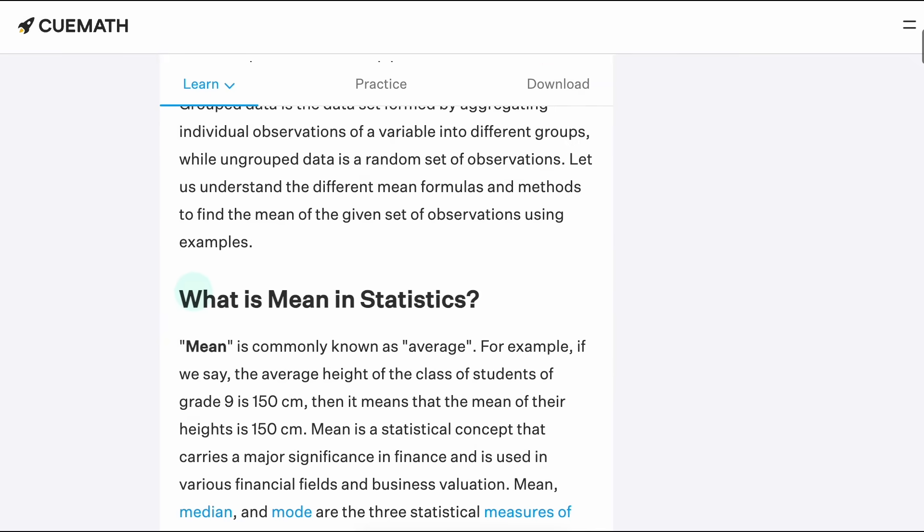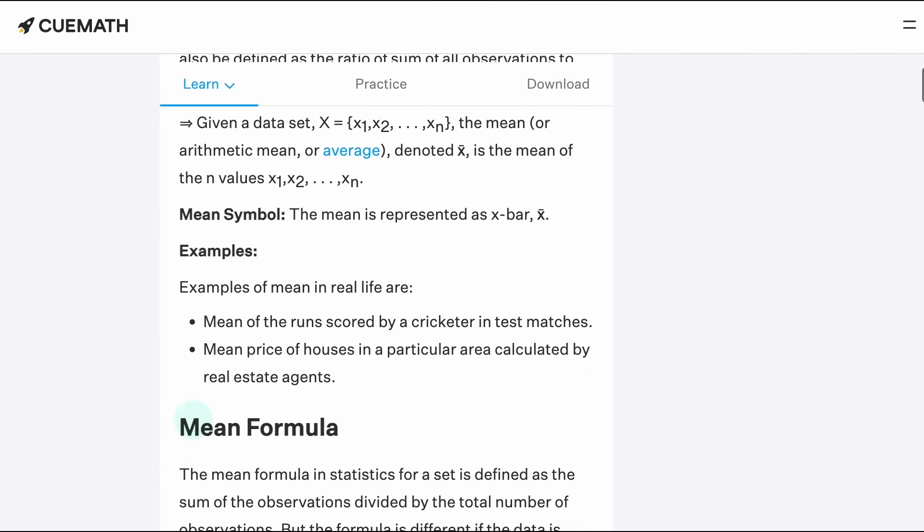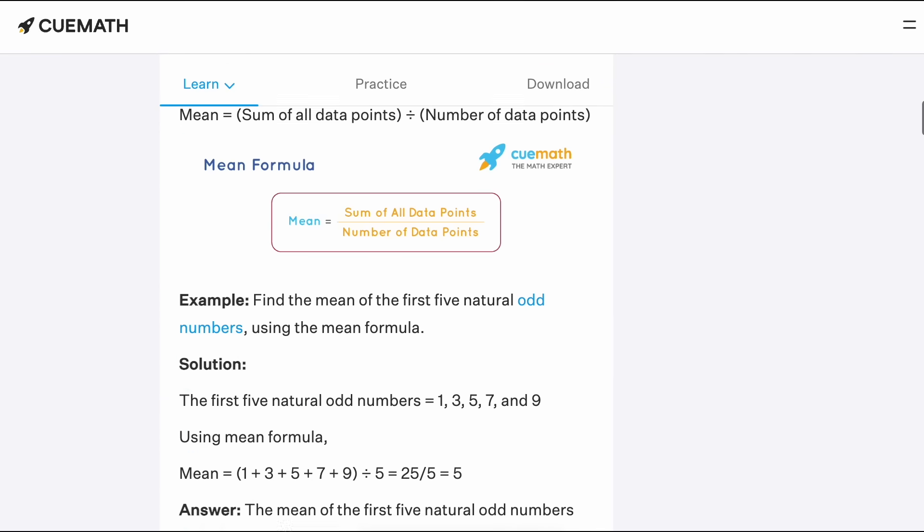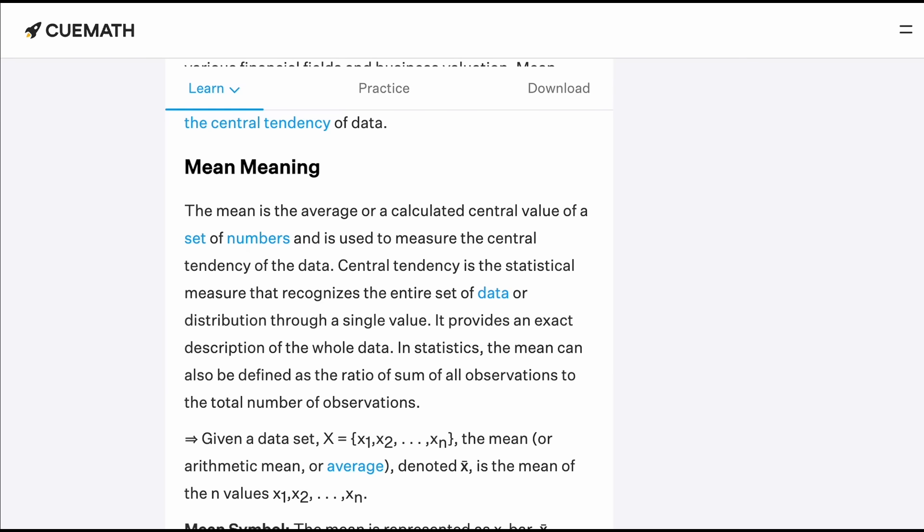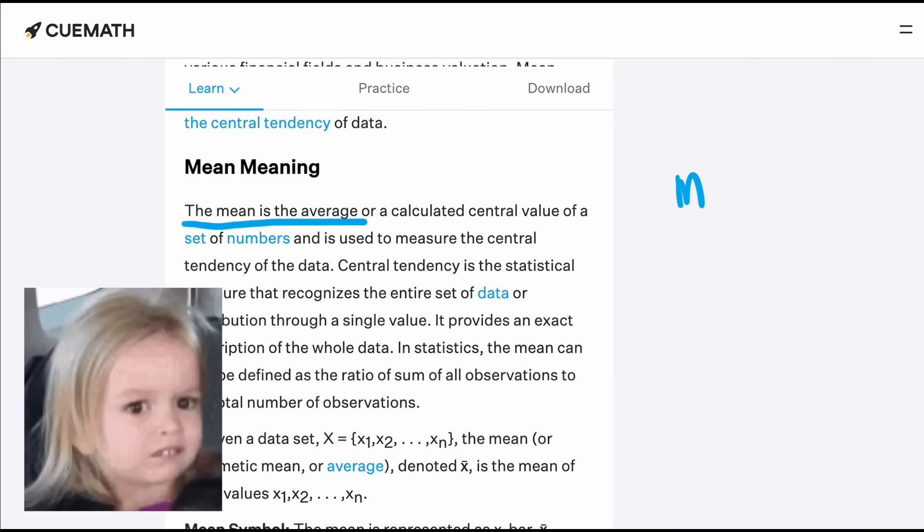Take this website, for example. It starts off by defining the mean as the algorithm for calculating the arithmetic mean. That isn't very helpful for understanding what the mean is, though. What a mean is, or what it's supposed to represent, is different than how to calculate it. This website does define the mean later as the average, which still isn't very helpful if you're just learning the idea.